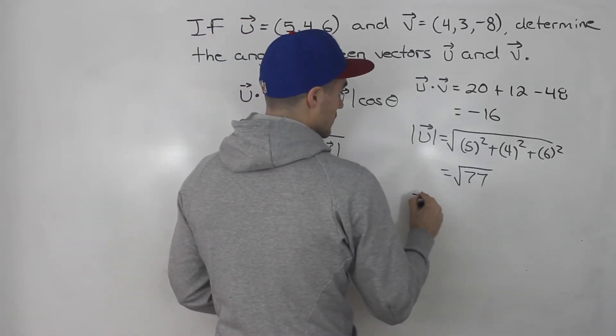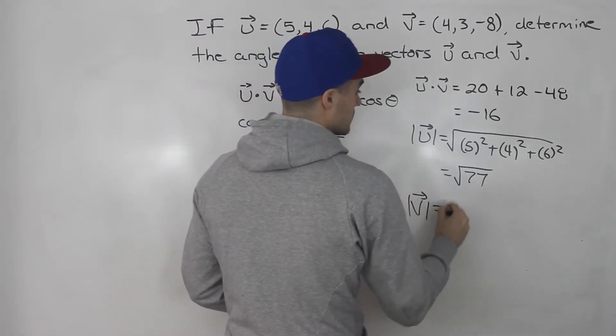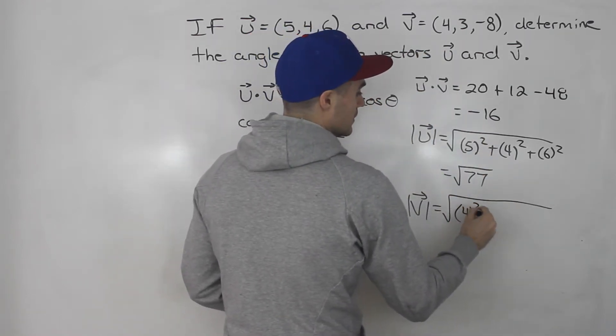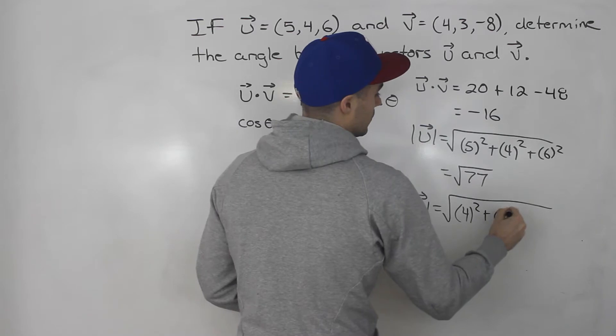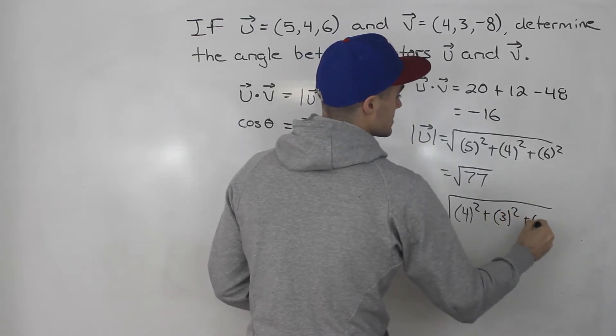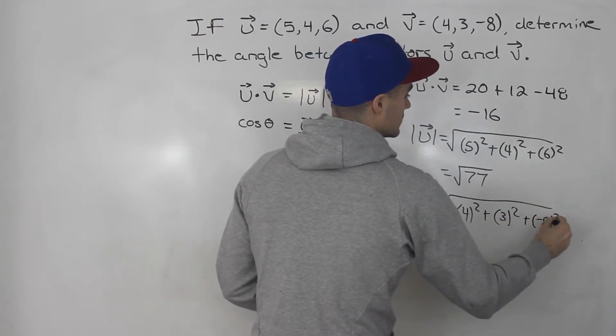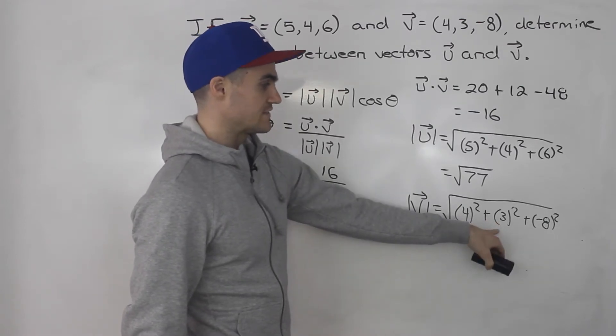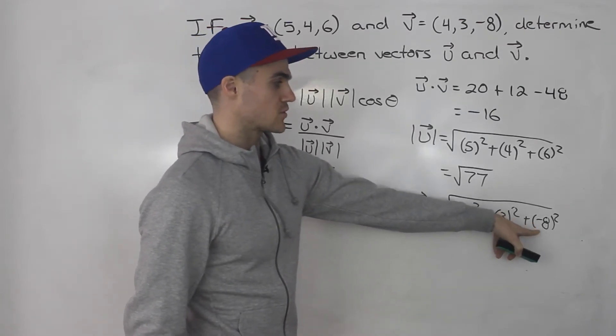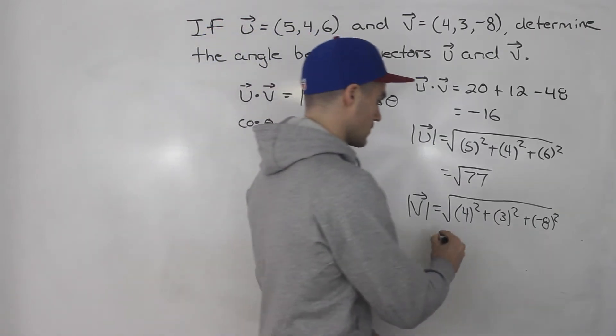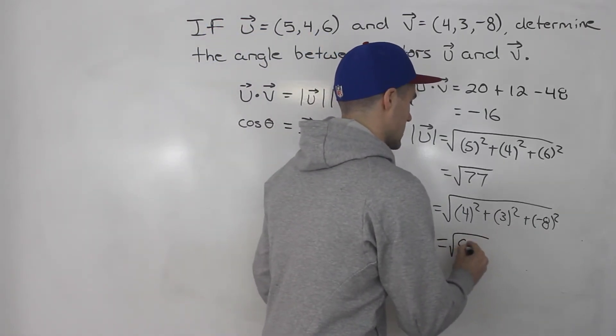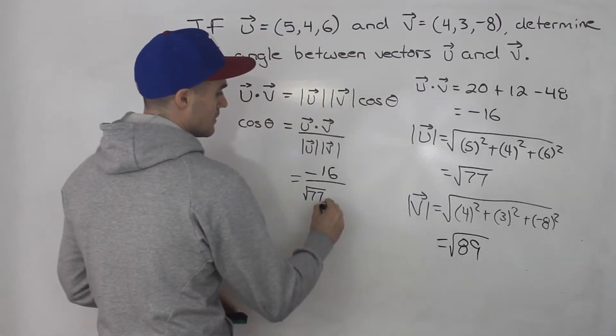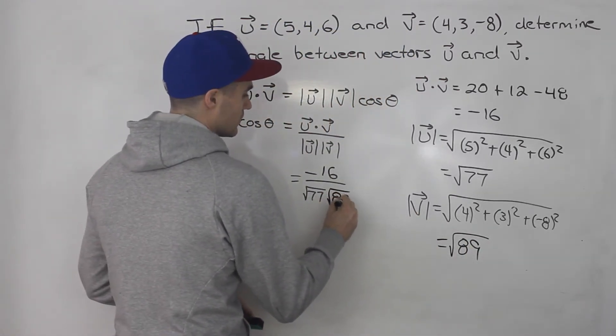And then the magnitude of v, same thing. We would take the square root of the x component squared plus the y component squared plus the z component squared. 4 squared is 16 plus 3 squared is 9, that's 25, plus negative 8 squared which is 64. 25 plus 64 gives us 89. So the magnitude of v is the square root of 89.